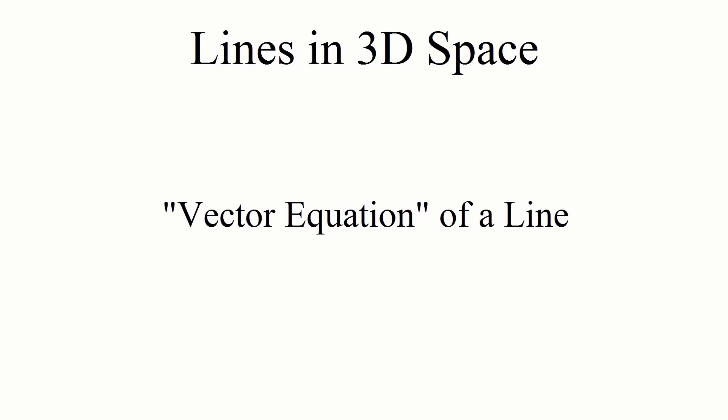We'll start with the so-called vector equation of a line. The vector equation form of a line is a lot like point-slope form for a 2D line. In point-slope, we defined a line given two pieces of information: a point on the line and the slope of the line.